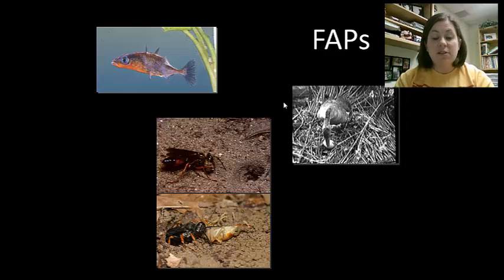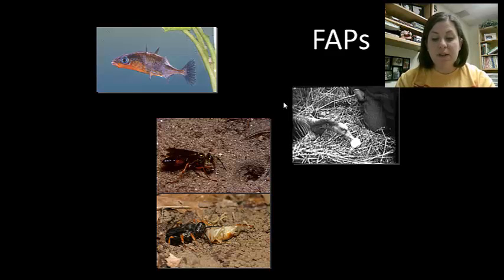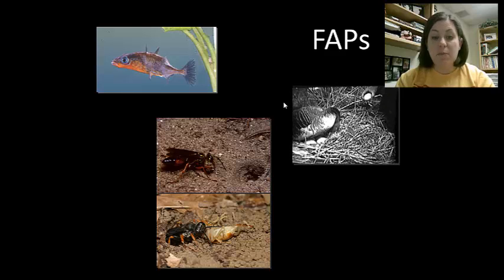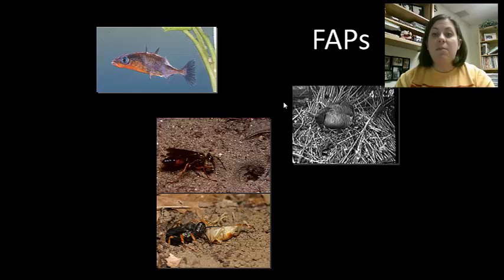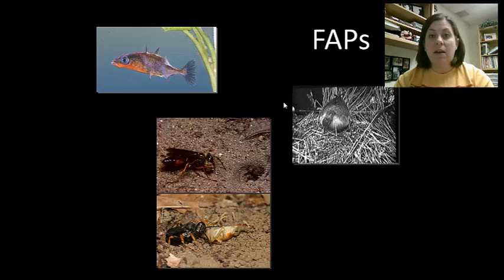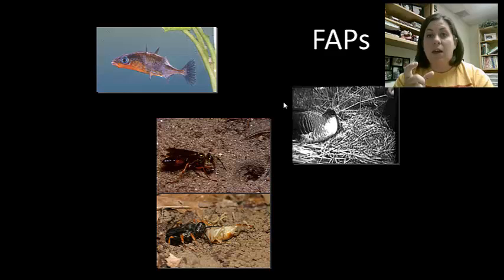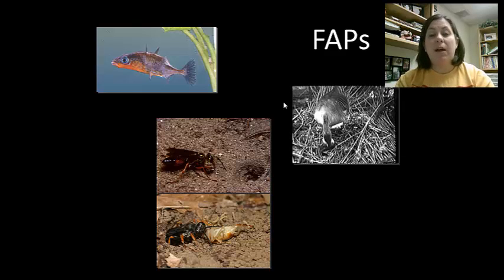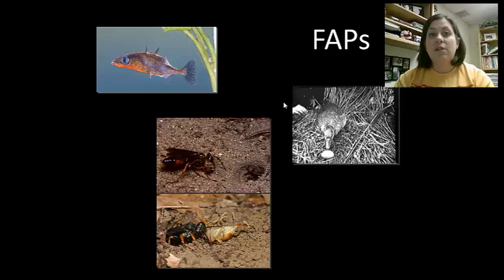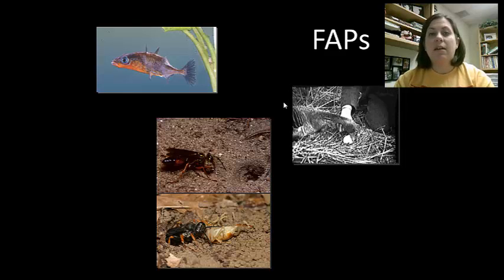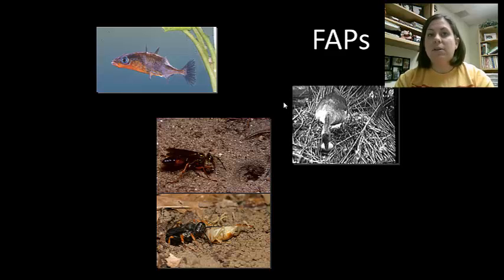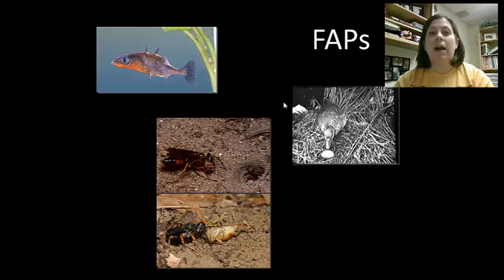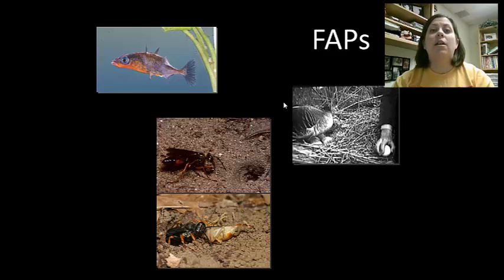There can be modifications to these FAPs that can be learned through experience. Laughing gull chicks, like seagull chicks, have an FAP where when they see a red stick like the bill of their parent, they will peck at it, and when they peck at it the parent gives them food. That's genetic — they automatically do it. However, the older they get, the more accurate they get at hitting the beak. That's where they learn: as they develop better motor skills, they actually learn how to do the action better. This is what we call a modified FAP.